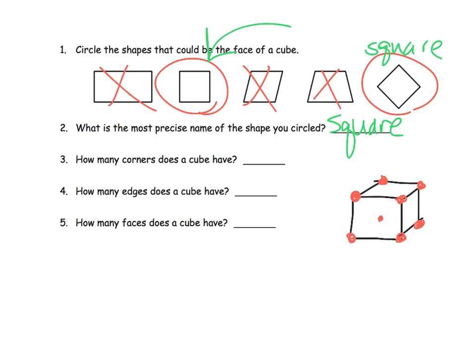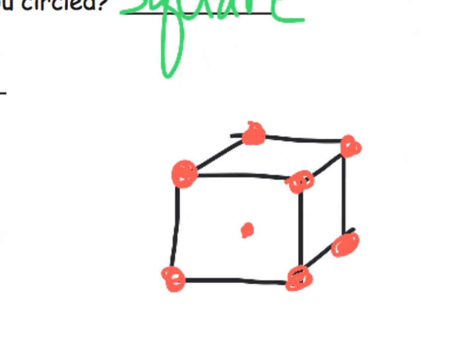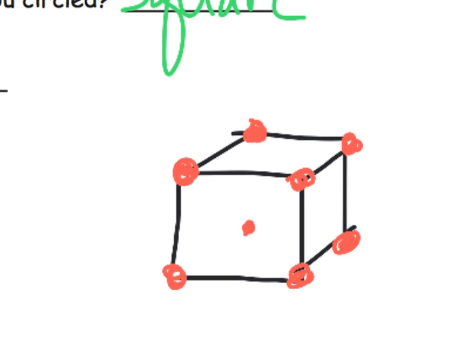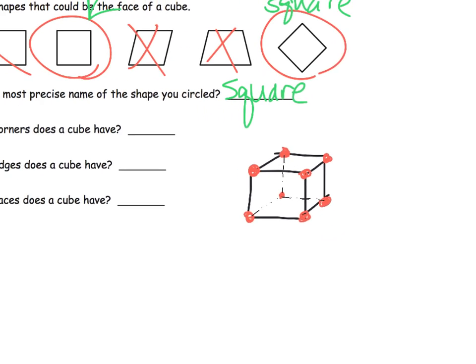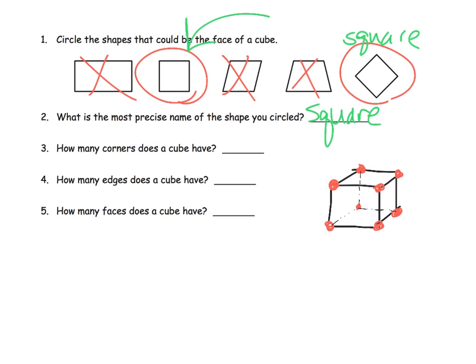And we have one back there that we can't quite see because, technically, those back edges go down and over — there's that back corner that we can't quite see. And so, we see that there are eight corners, or eight vertices.